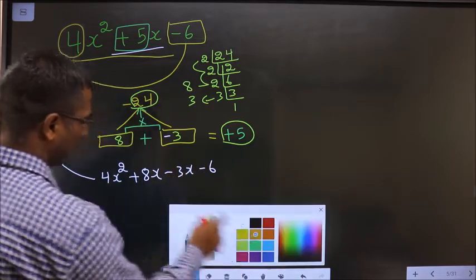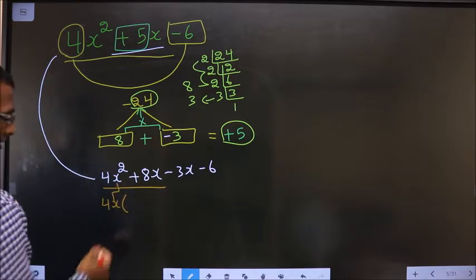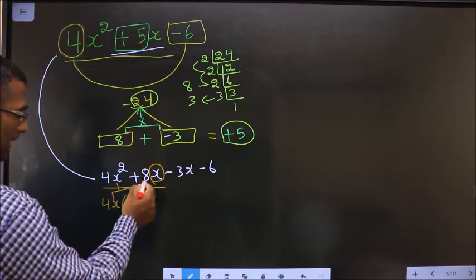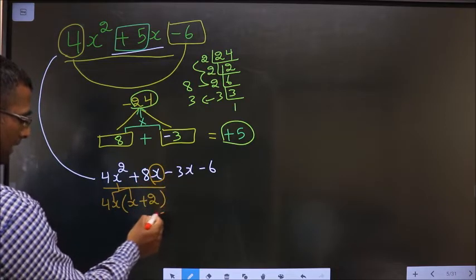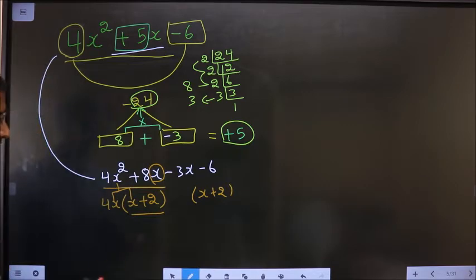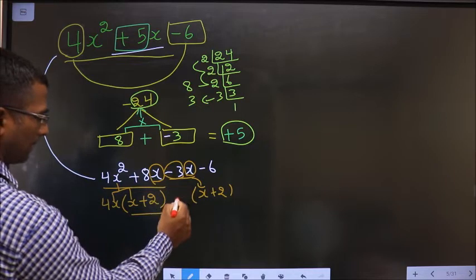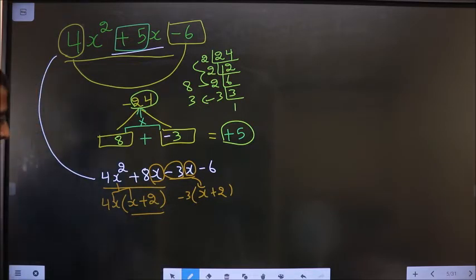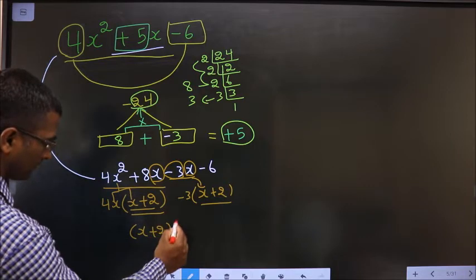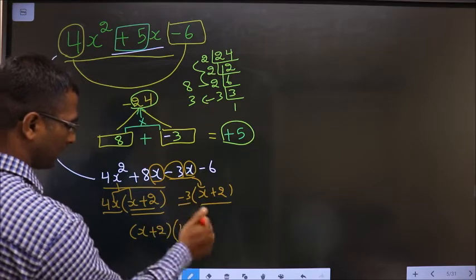From these first 2 terms, 4x can be taken common. From x squared, x is out means another x is left inside. This x is out from 8x, and 4 is out means 2 is left. So you get x plus 2 here, and here also it should be x plus 2. From the last terms, x has gone inside means outside should be minus 3. Take x plus 2 common from both — left out with 4x and here left out with minus 3.